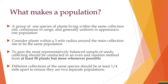It's important to gain the most representatively balanced sample of seeds. We want to make sure that we're collecting from at least 50 plants, but in many cases we want to prioritize sites that have much more than 50 plants. Those plants should be collected from in an even and random method. Also, different collections of the same species should be at least a quarter mile apart to ensure that they are two separate populations.